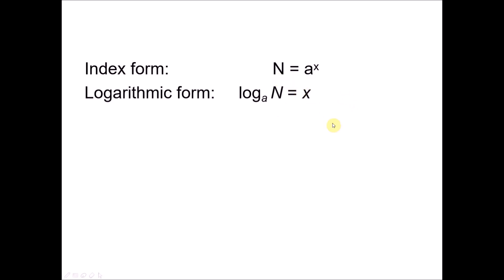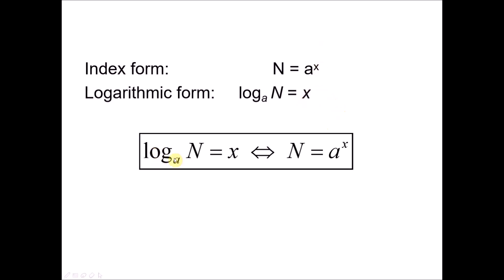These two forms can convert to each other. Generally, log base a of n equals to x can be converted to n equals to a to the power of x, and vice versa, with the condition that a is greater than 0 and a cannot equal 1. If this is your first time seeing this relation, it may be confusing, but it will become clearer through the coming examples.